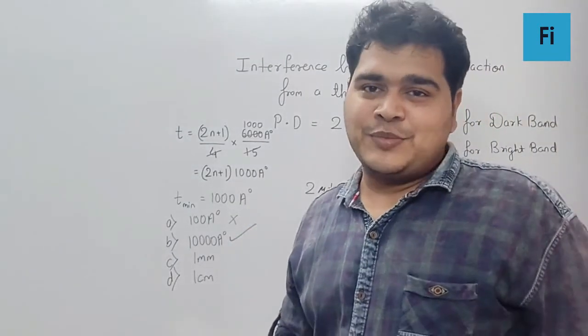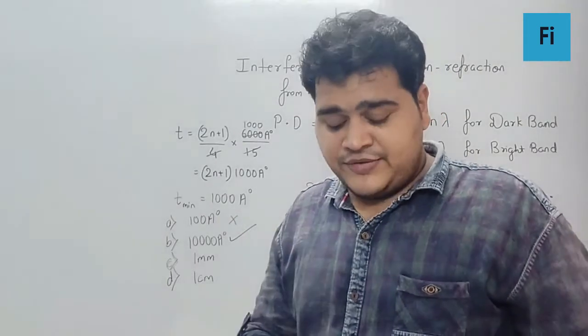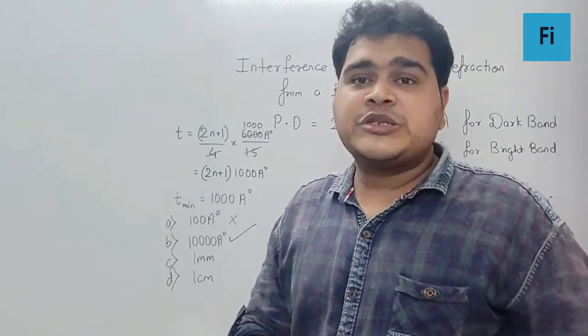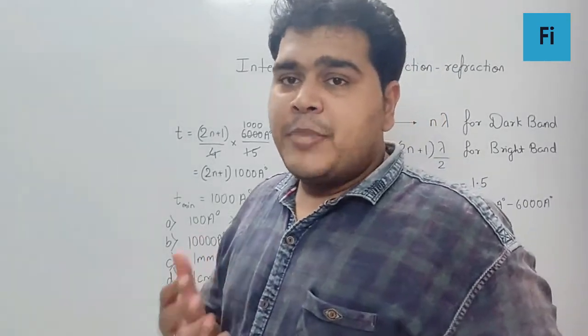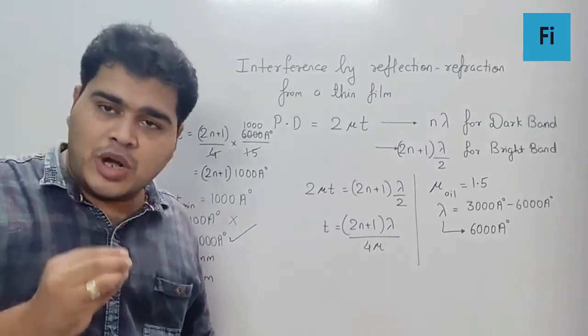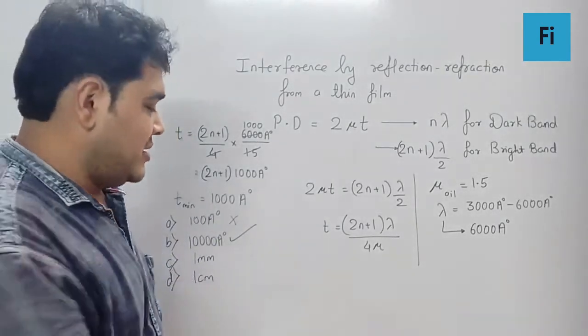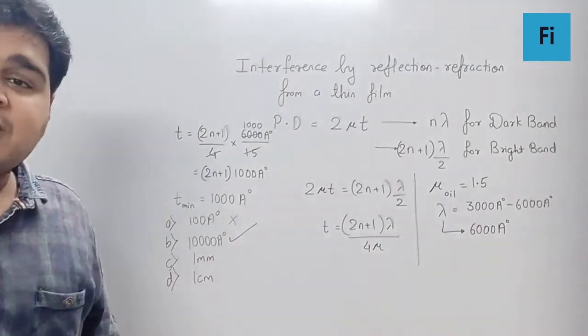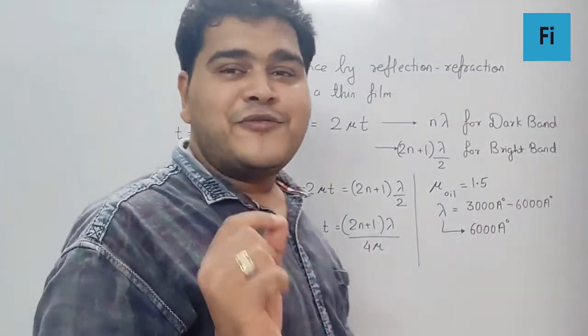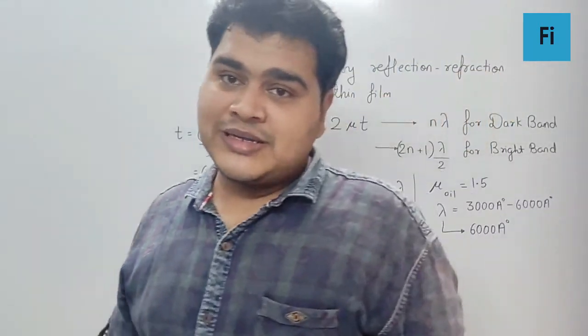Which means the minimum out of all which is possible and that is nothing but 10,000 Å. So guys here the correct answer should have been 1000 Å to be precise if we use the values which I have assumed, but practically out of given four options the one which is the smallest but still greater than 1000 Å is nothing but the 10,000 Å and so 10,000 Å becomes your final answer. So guys please copy this, this is quite an important sum.